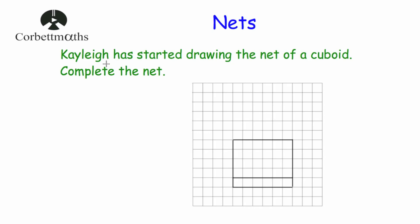Last question: Kayleigh has started drawing the net of a cuboid — complete the net. It's not complete because there are only two rectangles and we need six. The larger rectangle — six squares across and four squares wide — is the base. The other rectangle, which is six by one, will be the front face. So we now need to draw the back face, which is also a six by one rectangle, placed on the other side of the base.